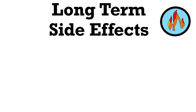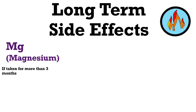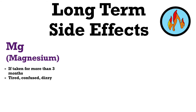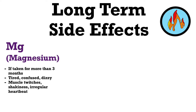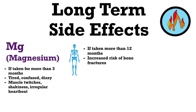Now let's talk about longer-term side effects. One is low magnesium — if you take omeprazole for more than three months, the levels of magnesium in your blood may fall. This can cause tiredness, confusion, dizziness, muscle twitching, shakiness, and even an irregular heartbeat. If you have any of these symptoms, speak to somebody. Another longer-term effect — taking it for more than 12 months — is an increased risk of bone fractures, something not commonly talked about.